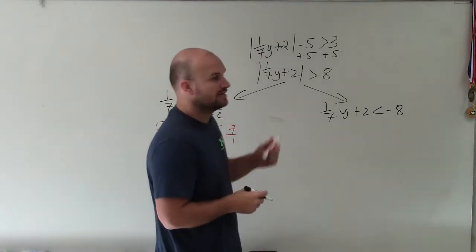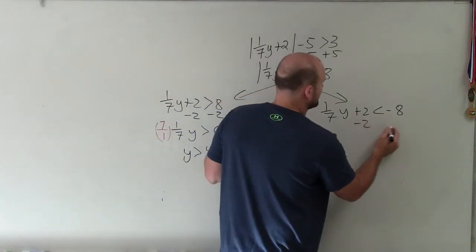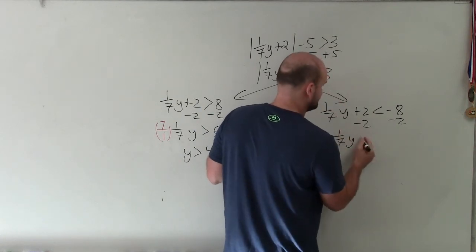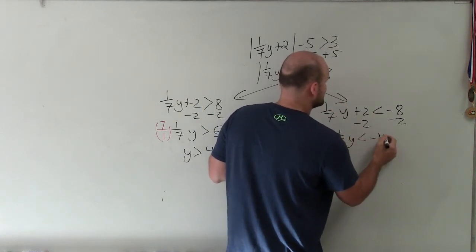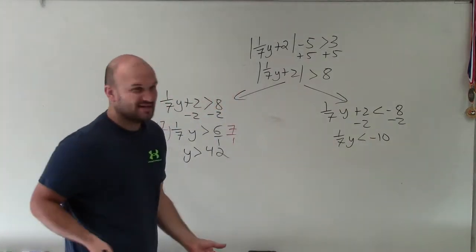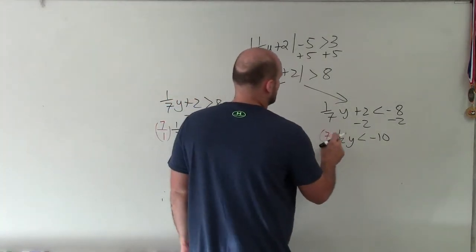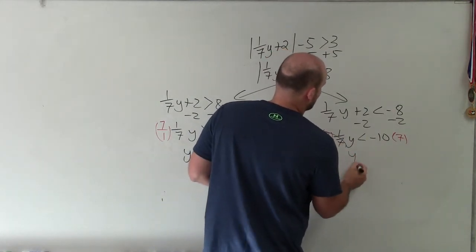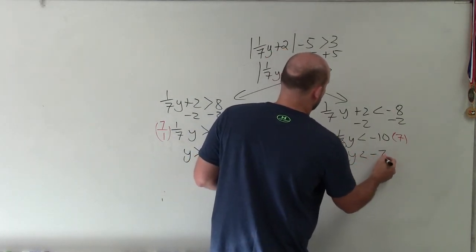Now, I look over here and go ahead and solve this one. I go negative 2, subtract negative 2. 1 7th y is less than negative 10. Again, when you multiply by 7 over 1, which is really basically just multiplying by 7, I get y is less than negative 70.